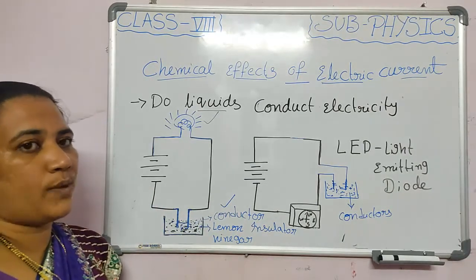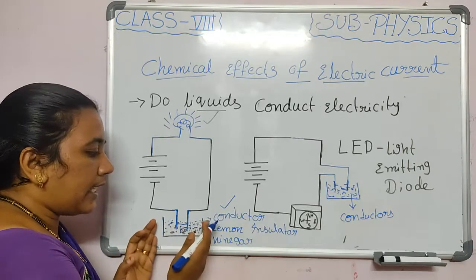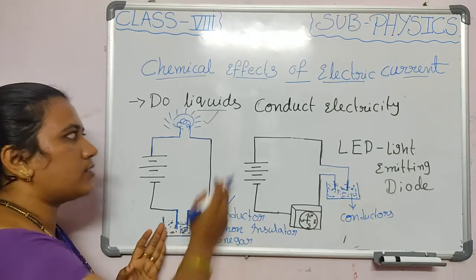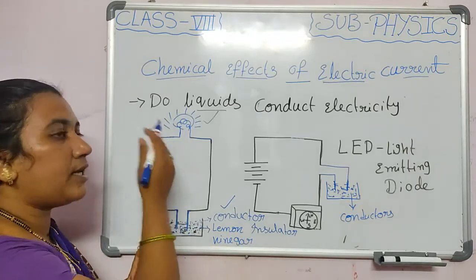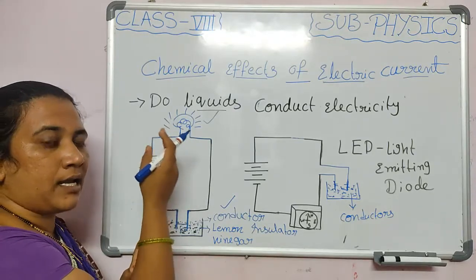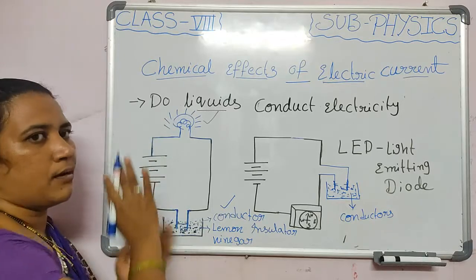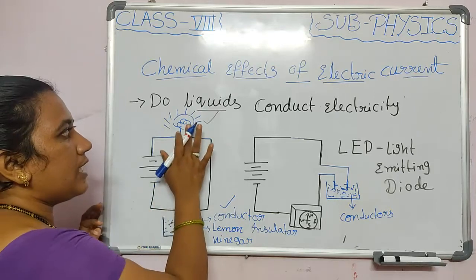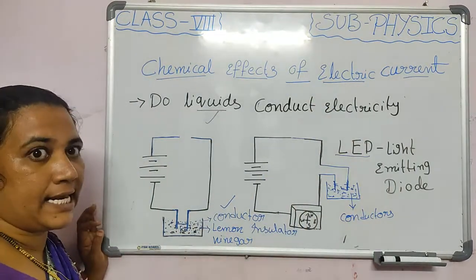In some situations the bulb does not glow, because the amount of liquid may not be sufficient to drive enough electrons through the bulb. The bulb's filament needs to heat up to produce light. To overcome this, instead of a normal bulb, we can use an LED bulb.